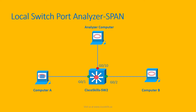So in order to satisfy the requirement, we need to define a SPAN session where the source port is G0/1 — which has computer A — and it will be copied to the destination port G0/10. The packets will be sent like this.